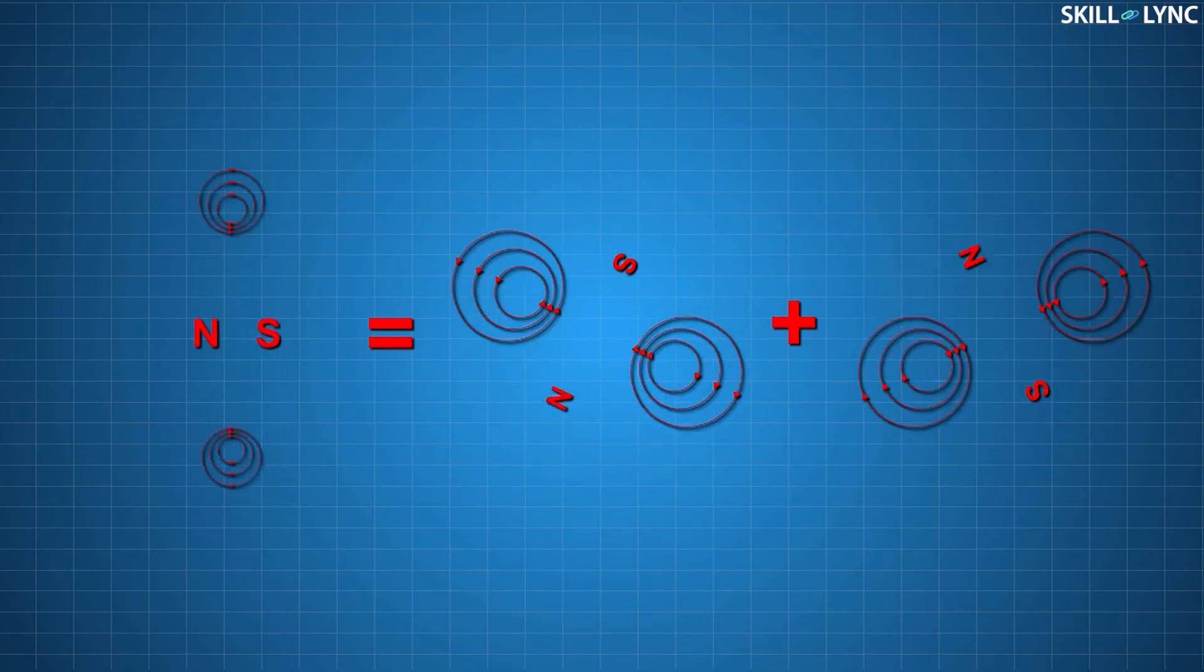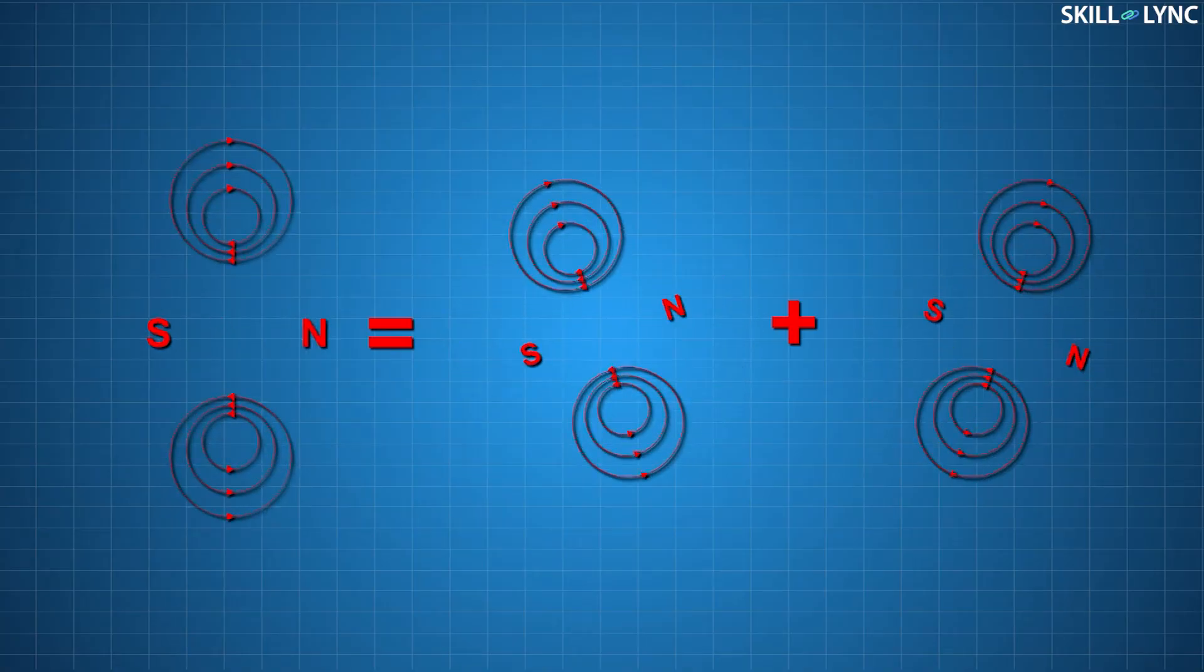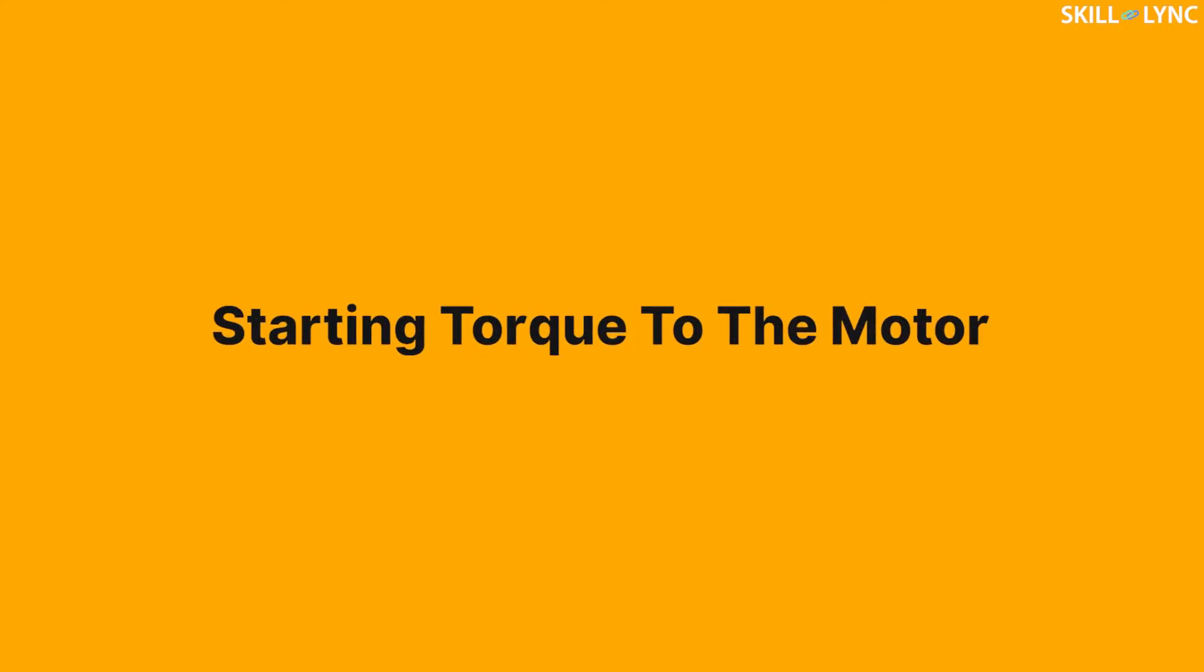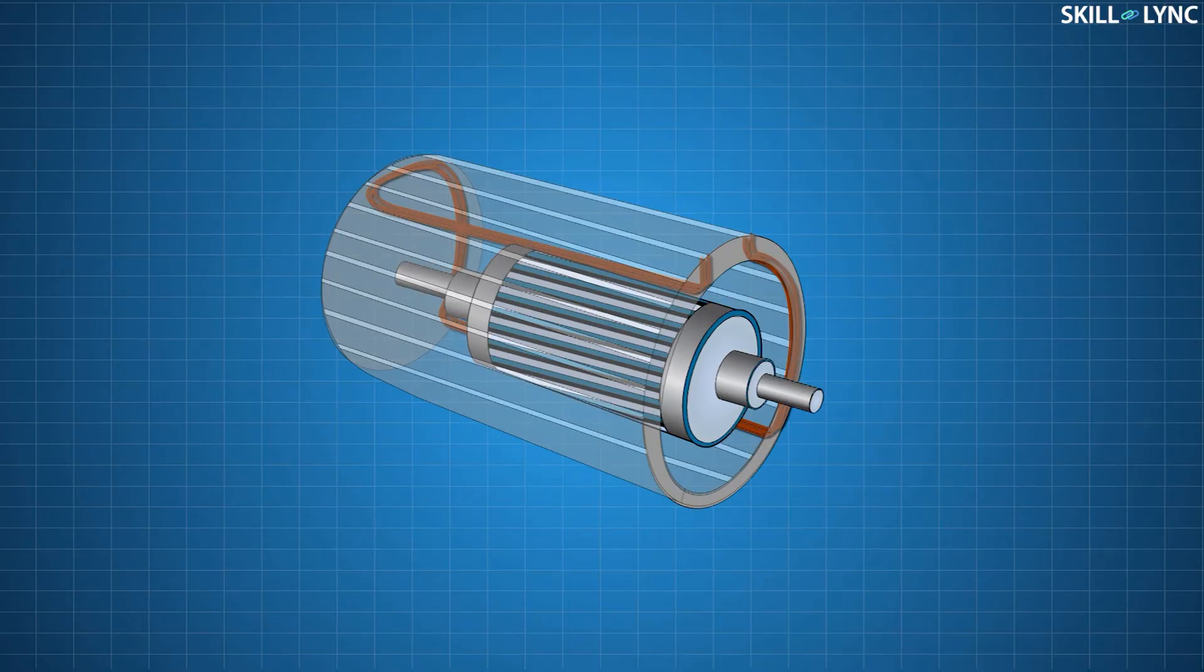This is done by bringing in another magnetic field that will help induce the starting torque required for the movement of the rotor. This is achieved by adding another winding called the auxiliary winding, which is placed perpendicular to the main winding.